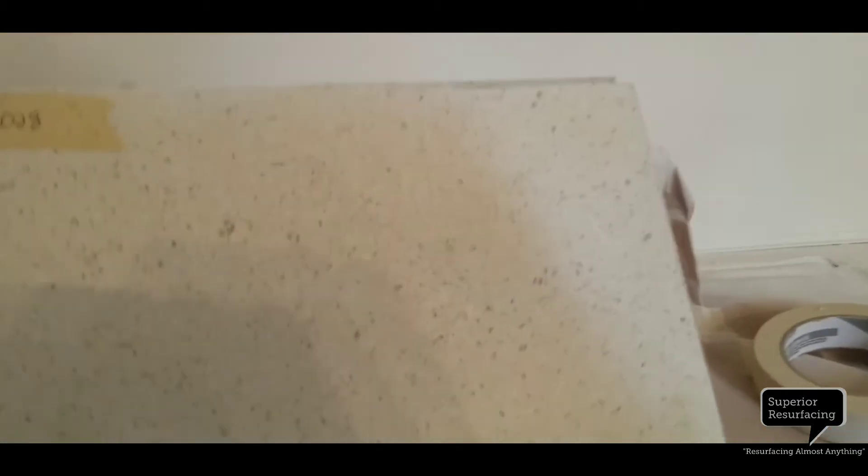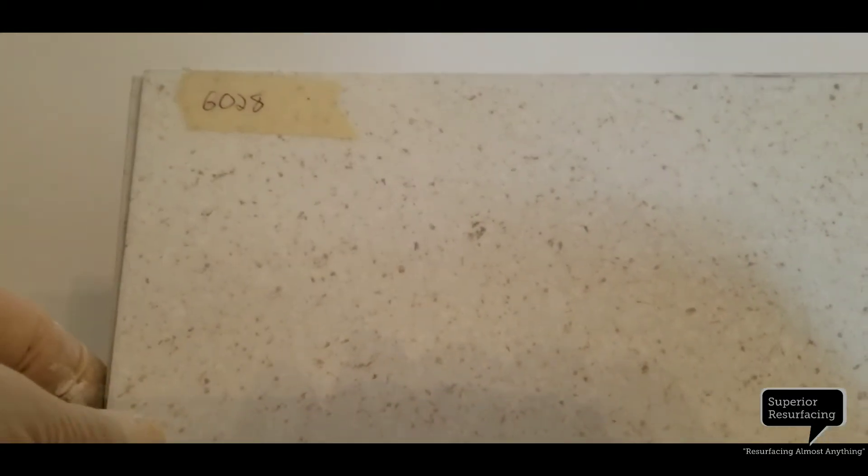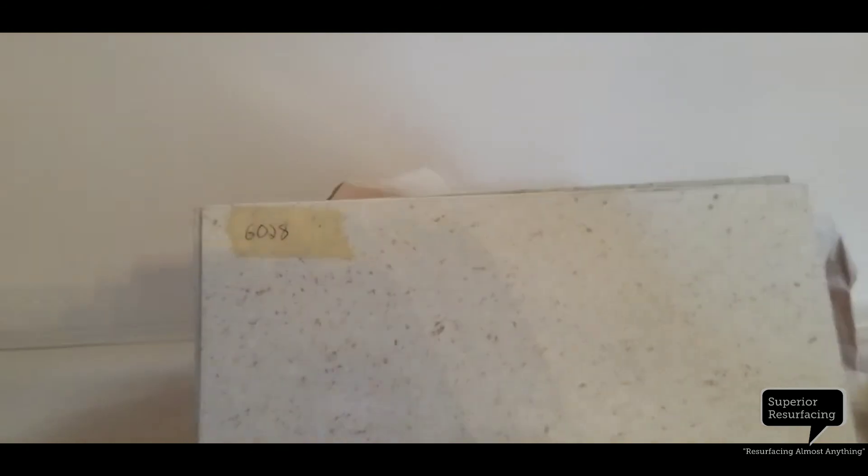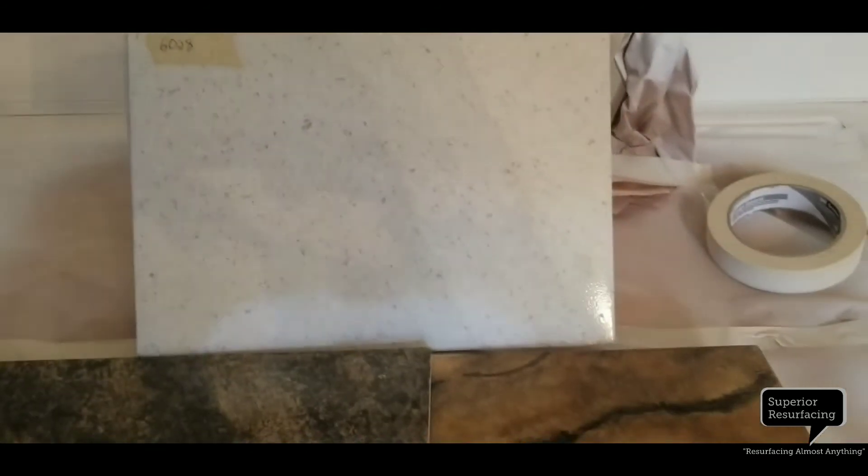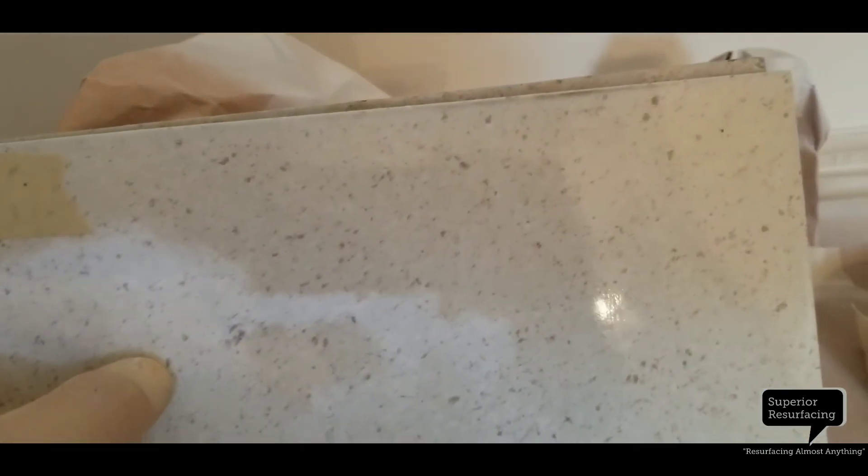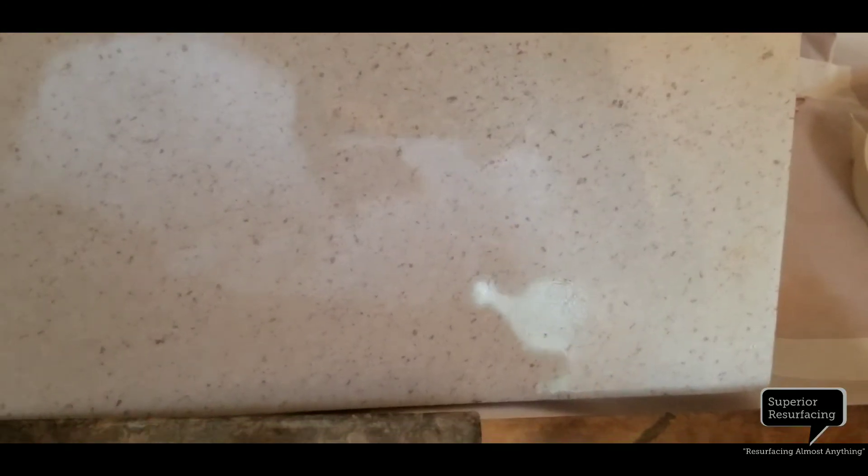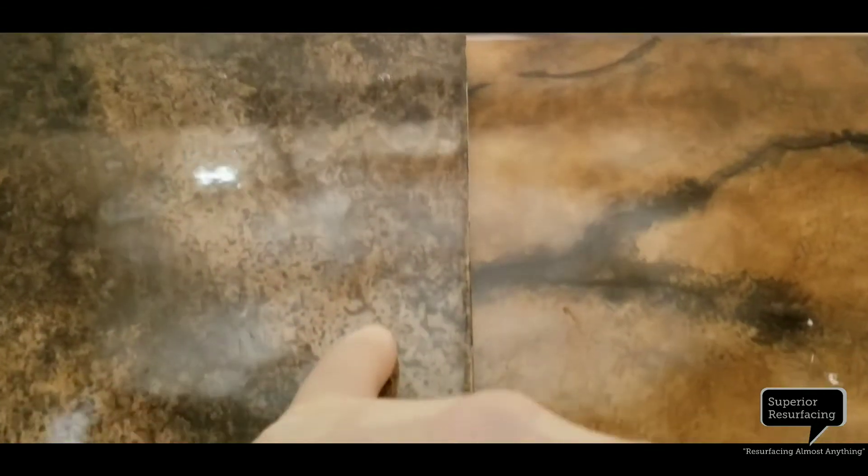And then for the backsplash, we're going to be doing this cappuccino or fusion color, it's number 628. But just the little itty bitty specs in here are very close to the topaz tan when it's been highlighted with a bit of charcoal. So we'll see what that looks like in just a little bit.